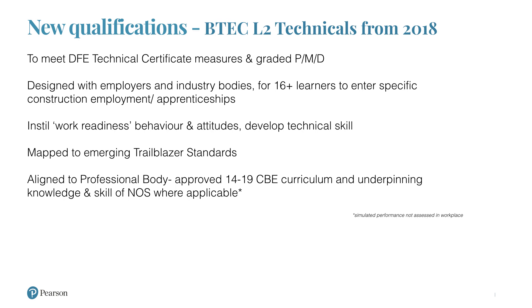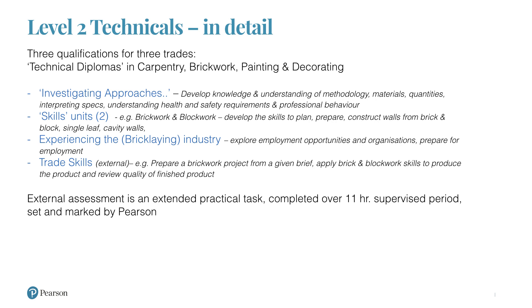These qualifications are designed to address skill shortages and ensure a pipeline of willing and capable 16-to-18-year-old learners who can then go on to apprenticeships or directly into employment. They map to any standards approved by professional bodies for the 14-to-19 curriculum and also to the NOS underpinning knowledge for those trades. The qualifications are all mandatory units — there are three: carpentry, brickwork, and painting and decorating.